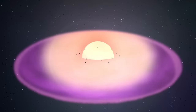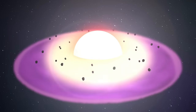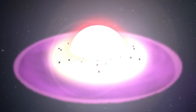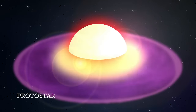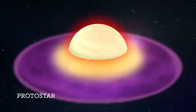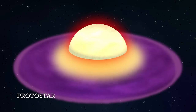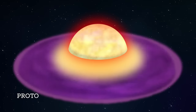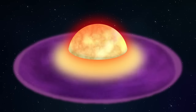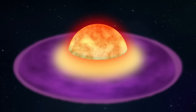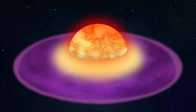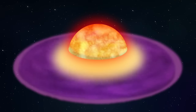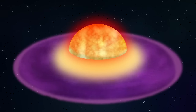A ball of hot gas formed in the center of the accretion disk, creating a protostar, also known as the Sun. Finally, when enough gas gathered in the center of the protostar, the pressure generated enough heat to fuse the atoms, forming a star.